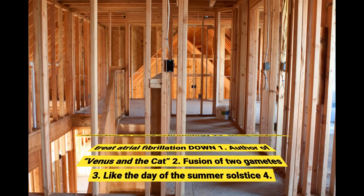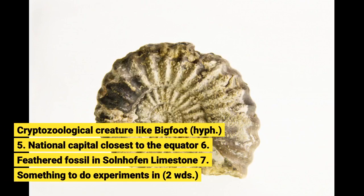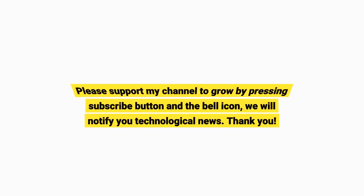Down continued: 3 — fusion of two gametes; 4 — like the day of the summer solstice; 5 — cryptozoological creature like Bigfoot; 6 — national capital closest to the equator; 7 — feathered fossil in Solnhofen limestone; 8 — something to do experiments in (2 words).